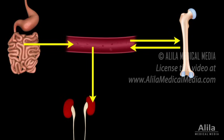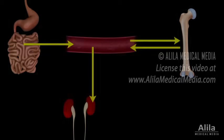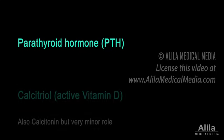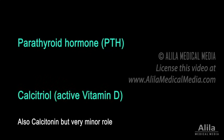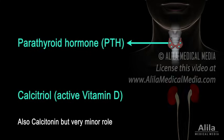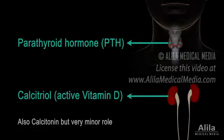The amount of calcium in circulation is mainly regulated by two hormones: parathyroid hormone and calcitriol. PTH is produced in the parathyroid gland, while calcitriol is made in the kidney.